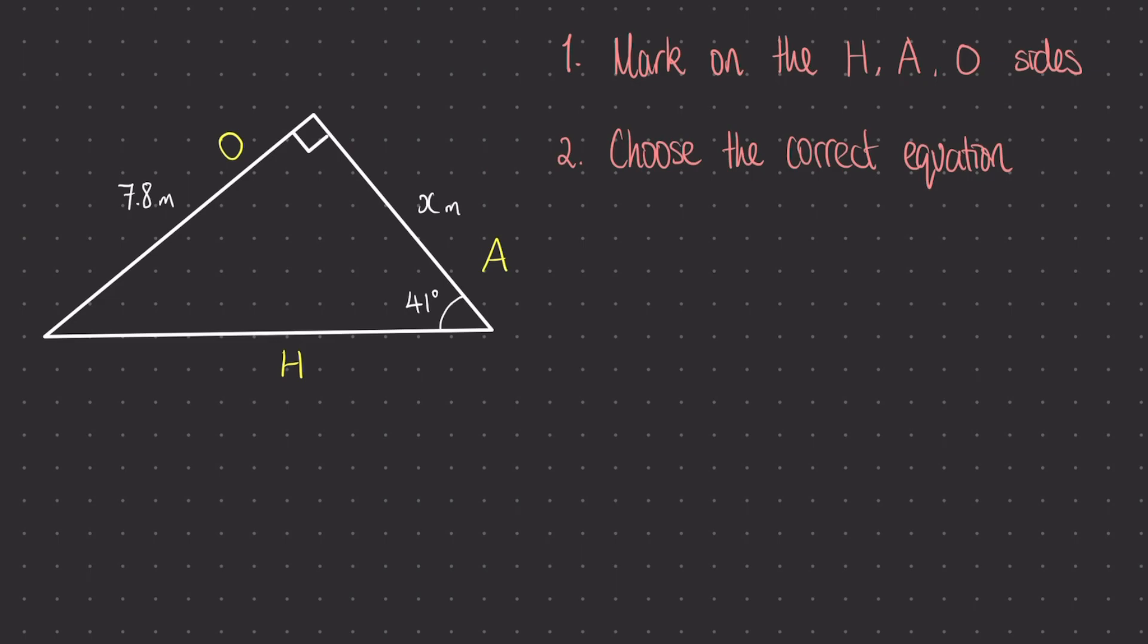The next step is to choose the correct equation for this particular question. In this case the two sides that are labelled are the opposite side and the adjacent side. Thinking back to our three equations, SOHCAHTOA, tan equals the opposite over the adjacent, is the equation that links together those two sides.